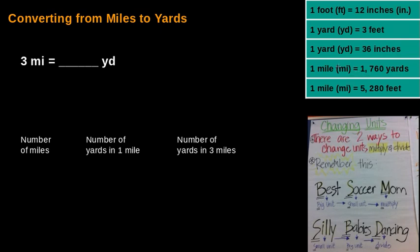Now we need to figure out: are we converting from a big unit to a small unit, or from a small unit to a big unit? If your units are written down with one in front, the unit with one in front is always the bigger unit. So one mile is bigger than one yard, meaning we're converting from the bigger unit — three miles — to the smaller unit, yards.